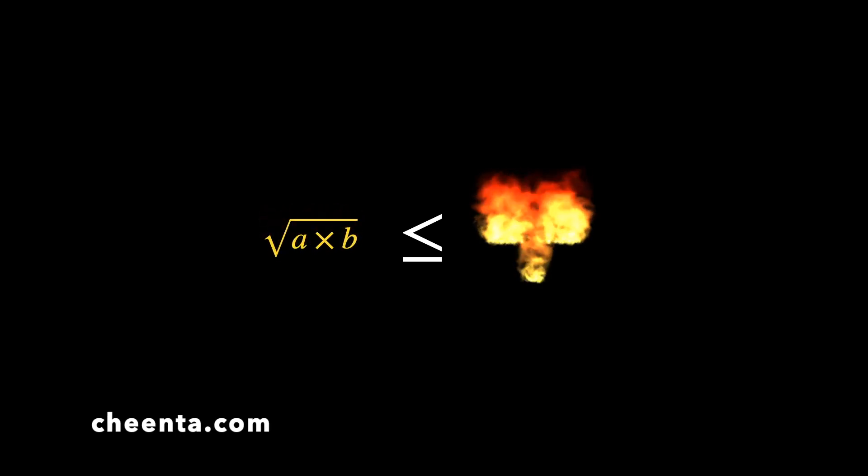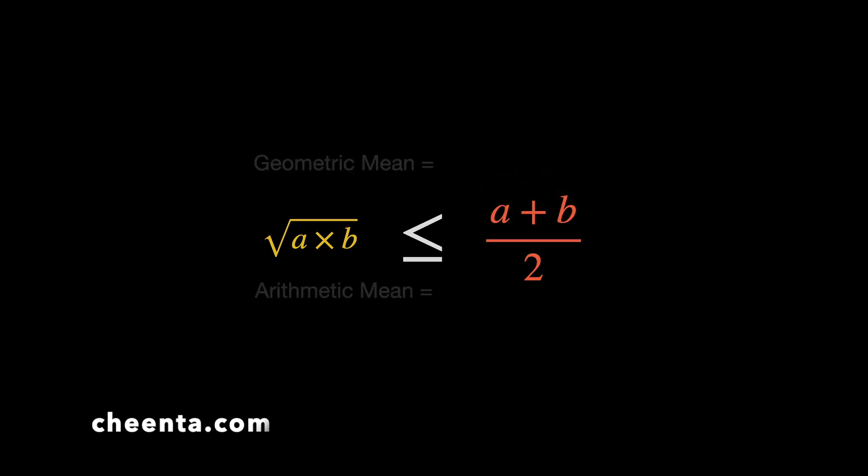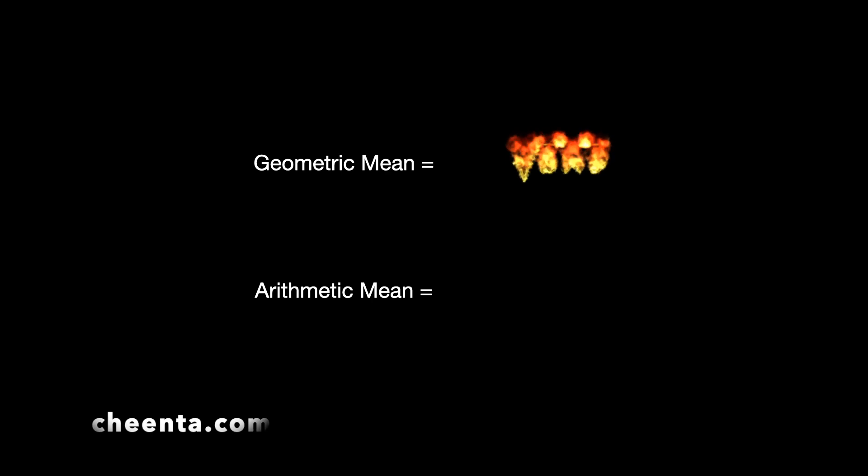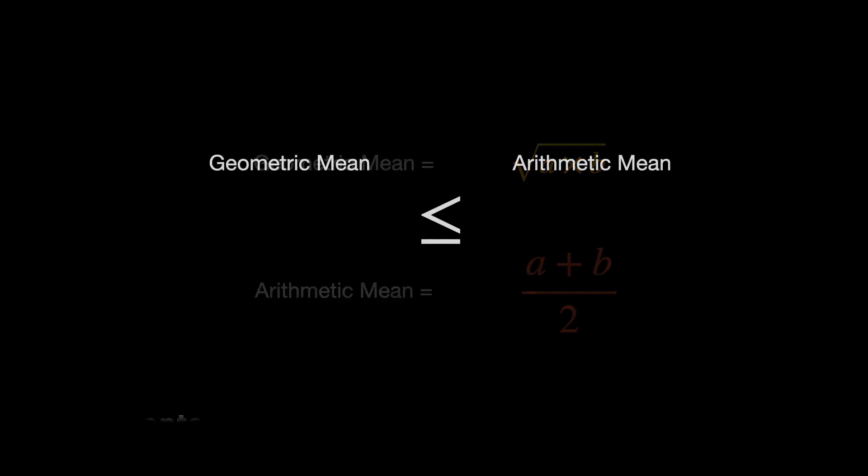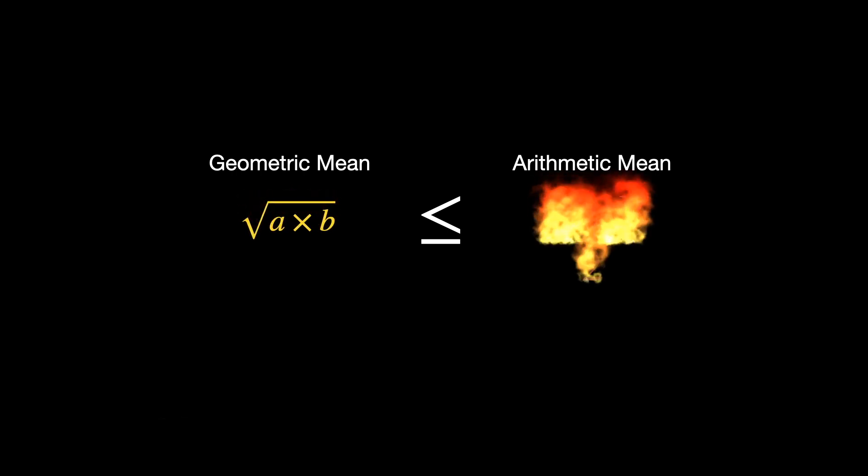We have this beautiful expression for geometric mean and arithmetic mean. Geometric mean being √(ab) and arithmetic mean being (a+b)/2. We have this much desired inequality that √(ab) ≤ (a+b)/2. This is the arithmetic mean geometric mean inequality.